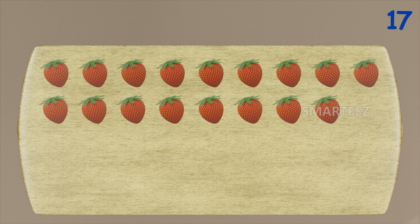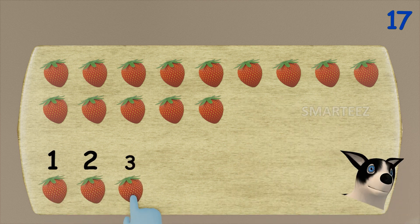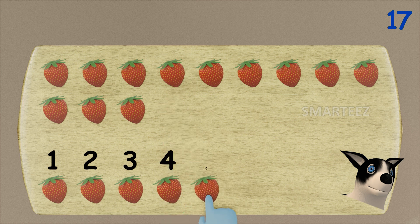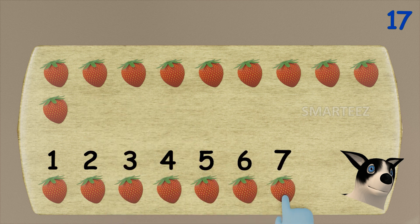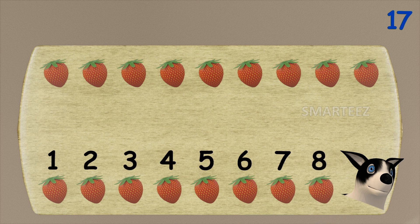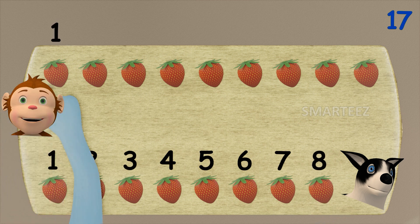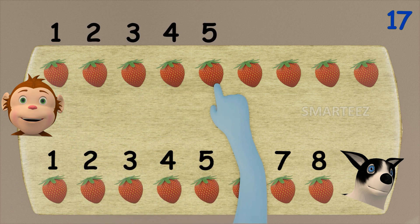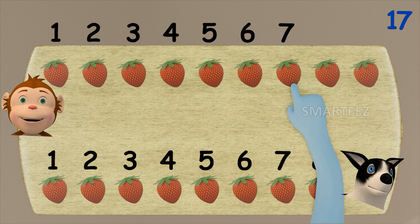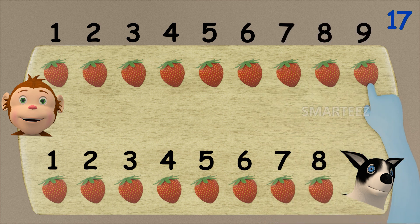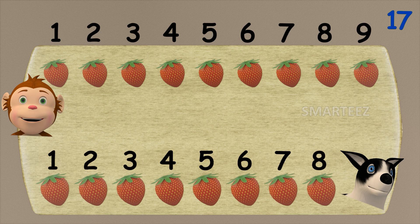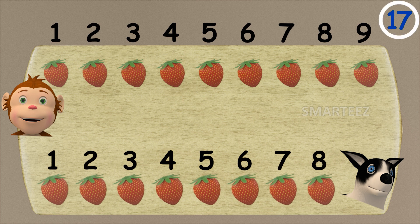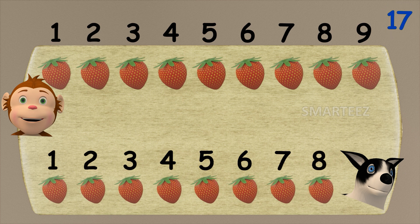I'm going to give eight strawberries to Byra. That's one, two, three, four, five, six, seven, and eight. Okay, let's see how many are left for Rangu. That's one, two, three, four, five, six, seven, eight, and nine. When we give eight strawberries to Byra after seventeen, we have nine strawberries left for Rangu.